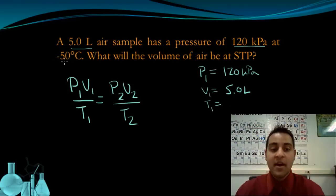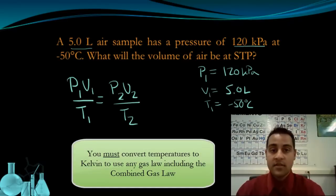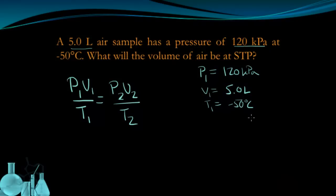My initial temperature is minus 50 degrees Celsius. But just like in the previous gas laws we've looked at, you cannot use Celsius temperatures. You have to convert it to Kelvin temperatures. So to convert from Celsius to Kelvin, we always add 273. And that's going to change the T1 temperature to Kelvin. And now I'm going to get 223 Kelvin as my initial temperature.